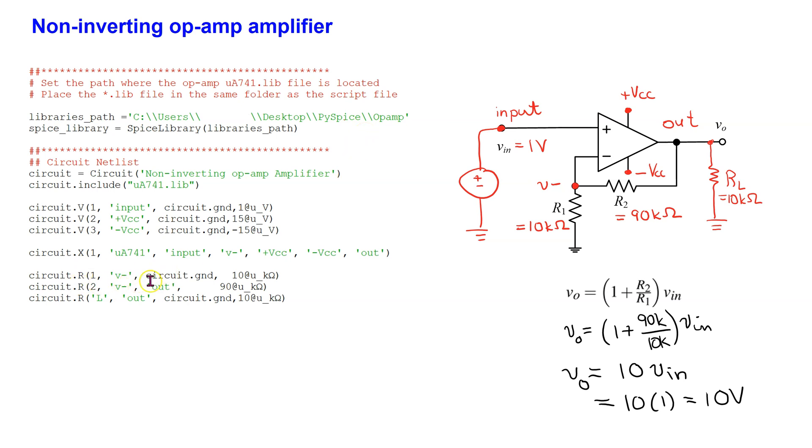This circuit netlist command defines the op-amp. The last five parameters specify the nodes where the op-amp is connected. The positive pin of the op-amp is connected to the input node. The negative pin of the op-amp is connected to the V minus node. These are the first and second node connections. Next are the two op-amp power supply nodes. Finally, the op-amp output node.